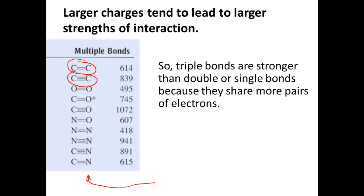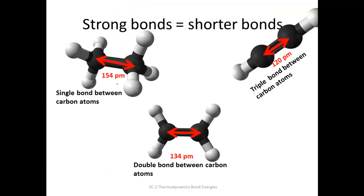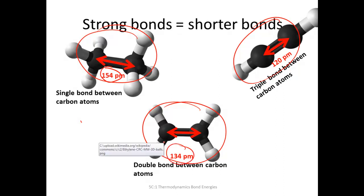Triple bonds are stronger than double bonds or single bonds because larger charges involved, more electrons involved, tend to lead to larger strengths of these bonds. Stronger bonds tend to be shorter bonds. And so you'll notice that as you go from single bonds to double bonds to triple bonds, you see that the bond length is becoming shorter. 154, 134, 120 in this case of single, double, and triple bonds between two carbon atoms.